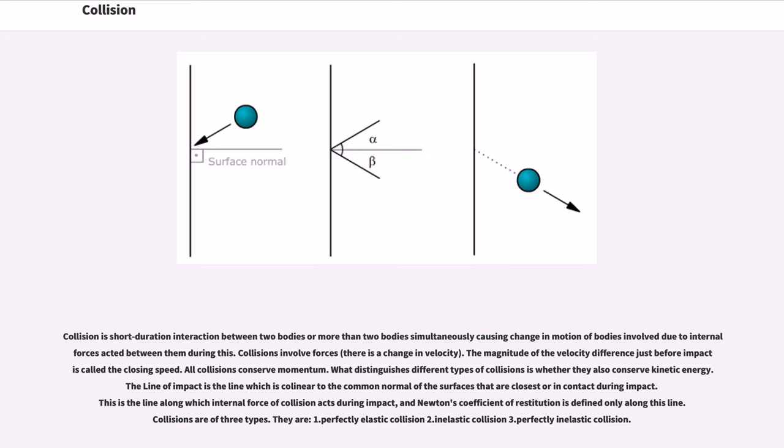Collisions involve forces. The magnitude of the velocity difference just before impact is called the closing speed. All collisions conserve momentum.